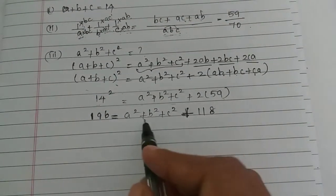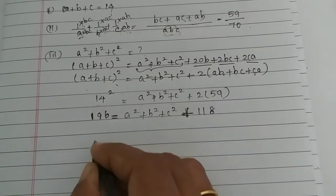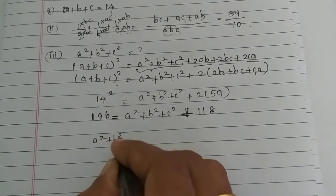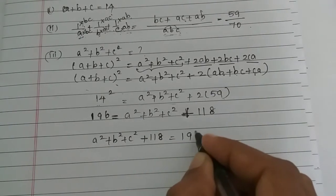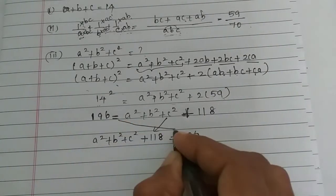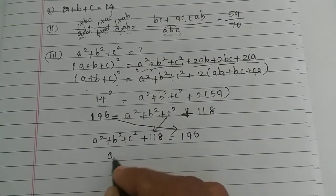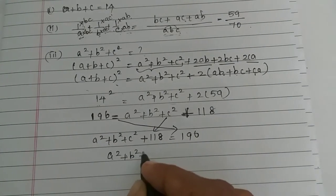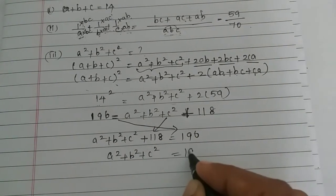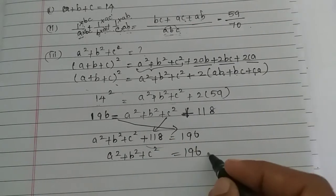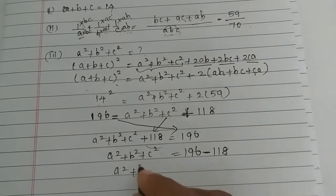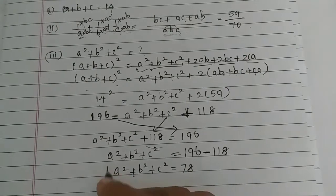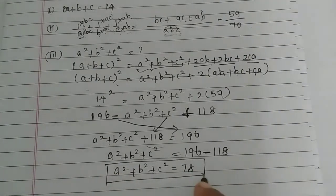So 196 = a² + b² + c² + 118. Rearranging: a² + b² + c² = 196 − 118 = 78. So the third subdivision answer is 78.